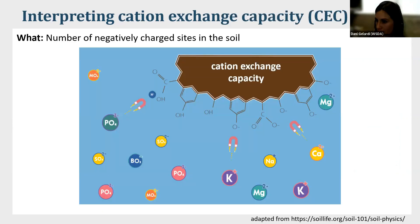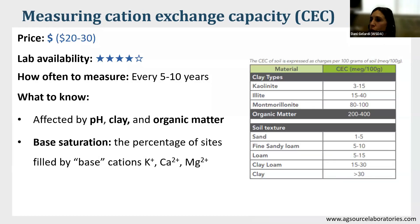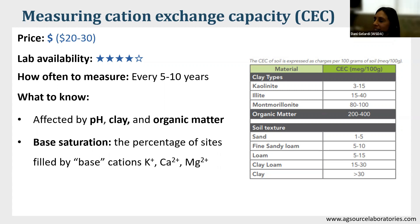Cation exchange capacity is literally the number of negatively charged sites in your soil that can hold onto positively charged cations. You can measure it in almost any lab every five to ten years. It is affected by pH, clay content, and organic matter content, and it determines how much base cations you can hold. Note that just because you have high CEC does not necessarily mean you also have high fertility — those sites could be full of hydrogen ions. It's good to measure CEC in combination with measurements of potassium, calcium, and magnesium.